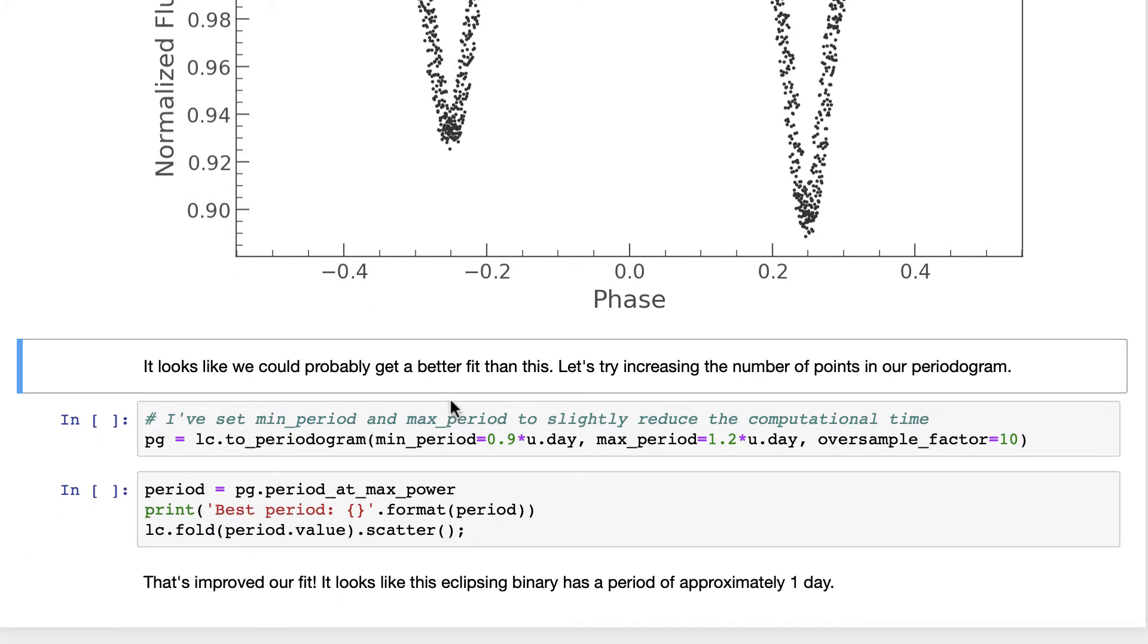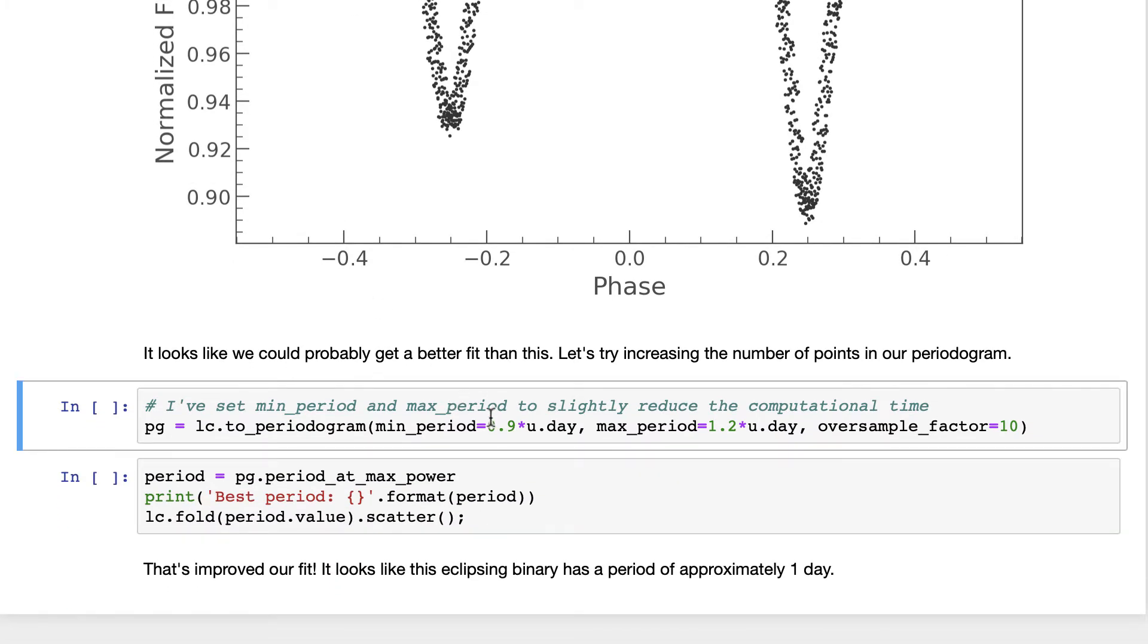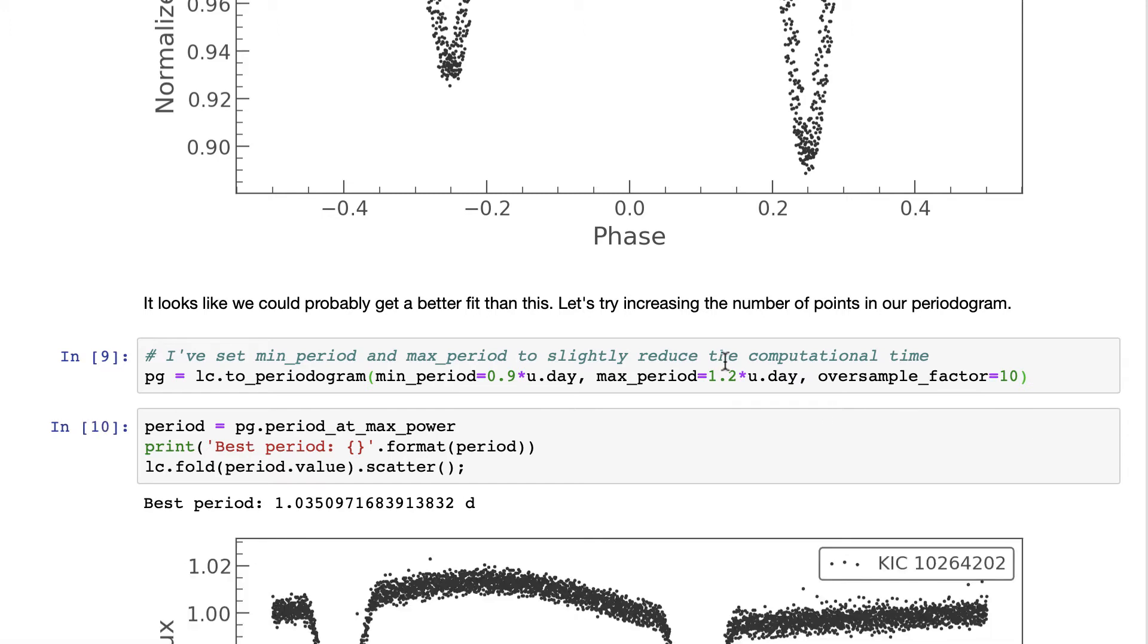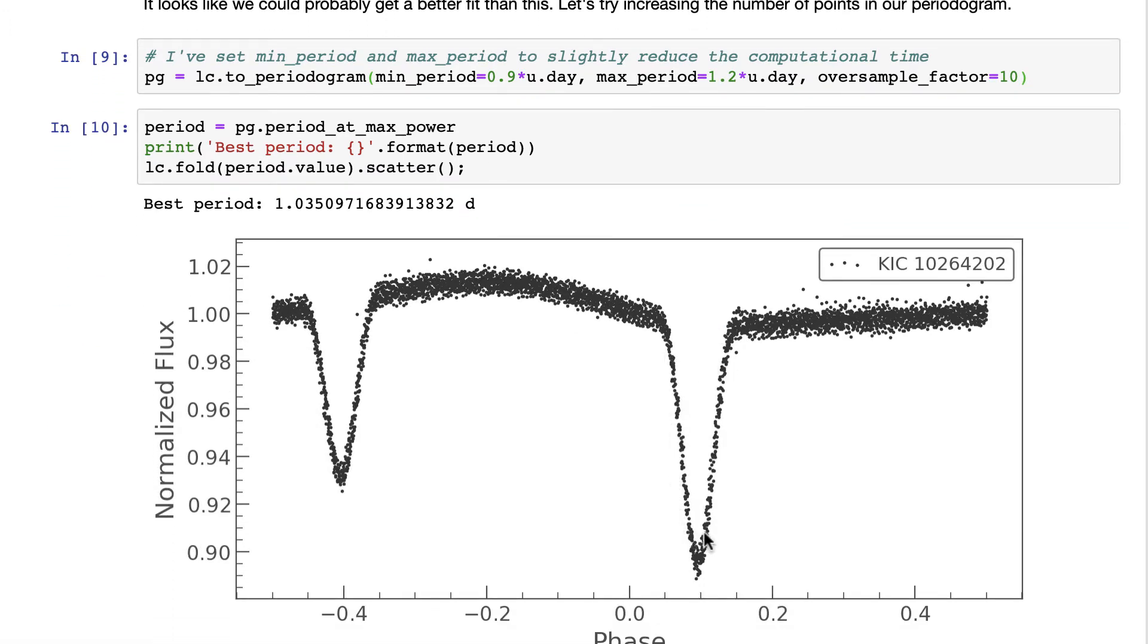So we can get a bit more refinement by zooming in on that range and oversampling and then plotting the light curve again. And what we see indeed is much tighter sidewalls of the light curves, primary and secondary eclipses.